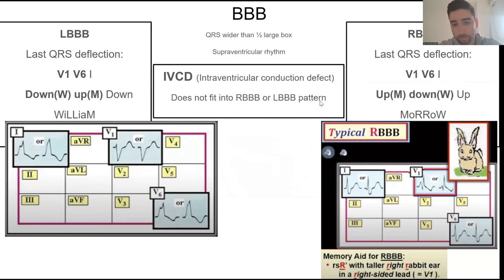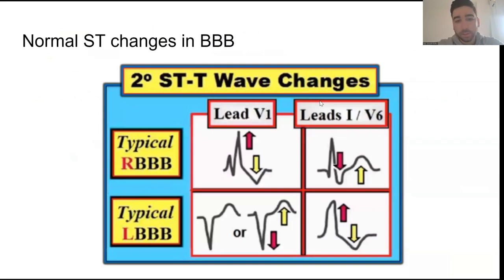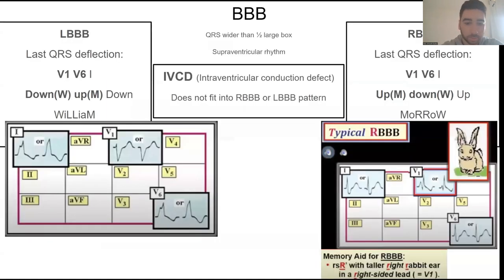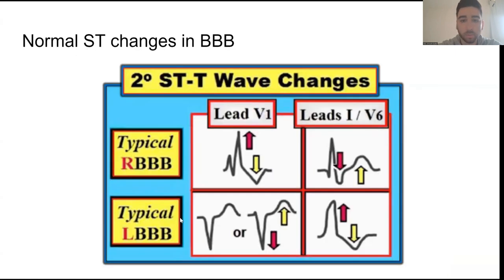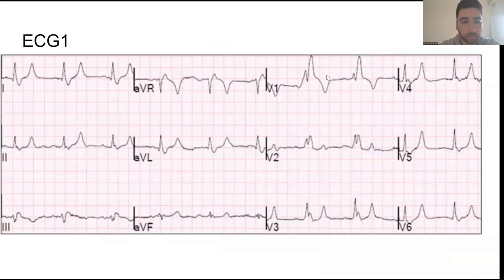Normal ST changes in bundle branch blocks are discordant. In the WILLIAM pattern, if the W is going down, the ST segment is going to be going up; if the M is going up, the ST segment is going to be going down. These are normal appearances of ST segments and T waves. If you see a positive QRS deflection, you'll see a negative ST segment and T wave, and vice versa.